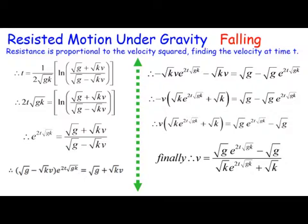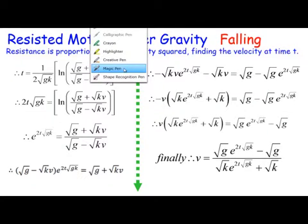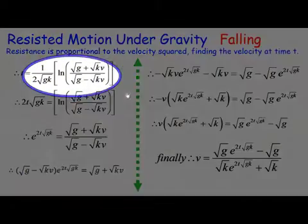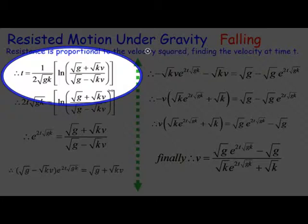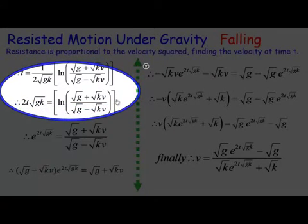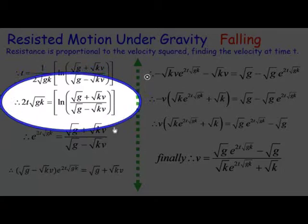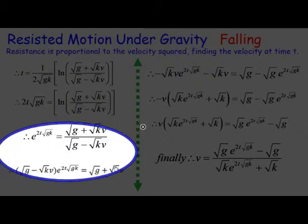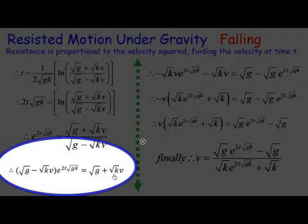Here you can see there's a fair bit of work involved in getting the velocity as a function of time. This is what we're eventually after. Basically we've got to try and extract that v out of that expression with the t in it, so we need to multiply by 2 root gk, take the exponentials of both sides. As you know, logs and exponentials are inverse functions, we can drop the v expression out. We need to rearrange, multiply by root g minus root kv.